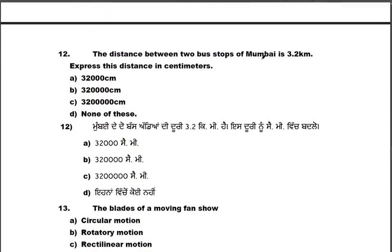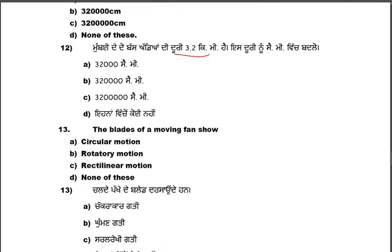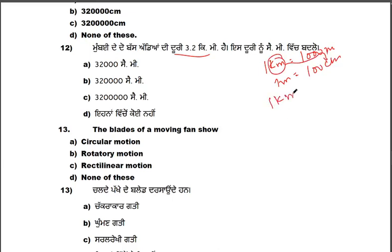The distance between two bus stops of Mumbai is 3.2 km. Express this distance in centimeters. We know that 1 kilometer equals 1000 meters, and 1 meter equals 100 centimeters. So we need to do a conversion from kilometer to centimeter.